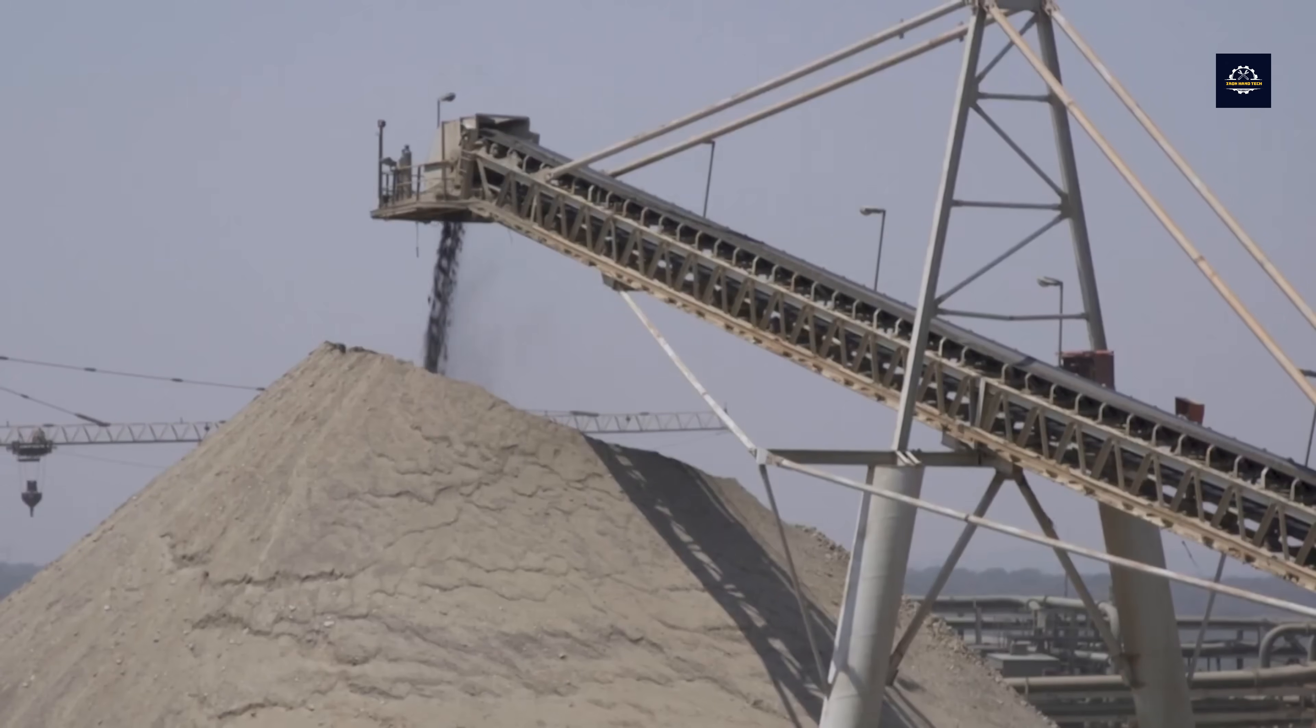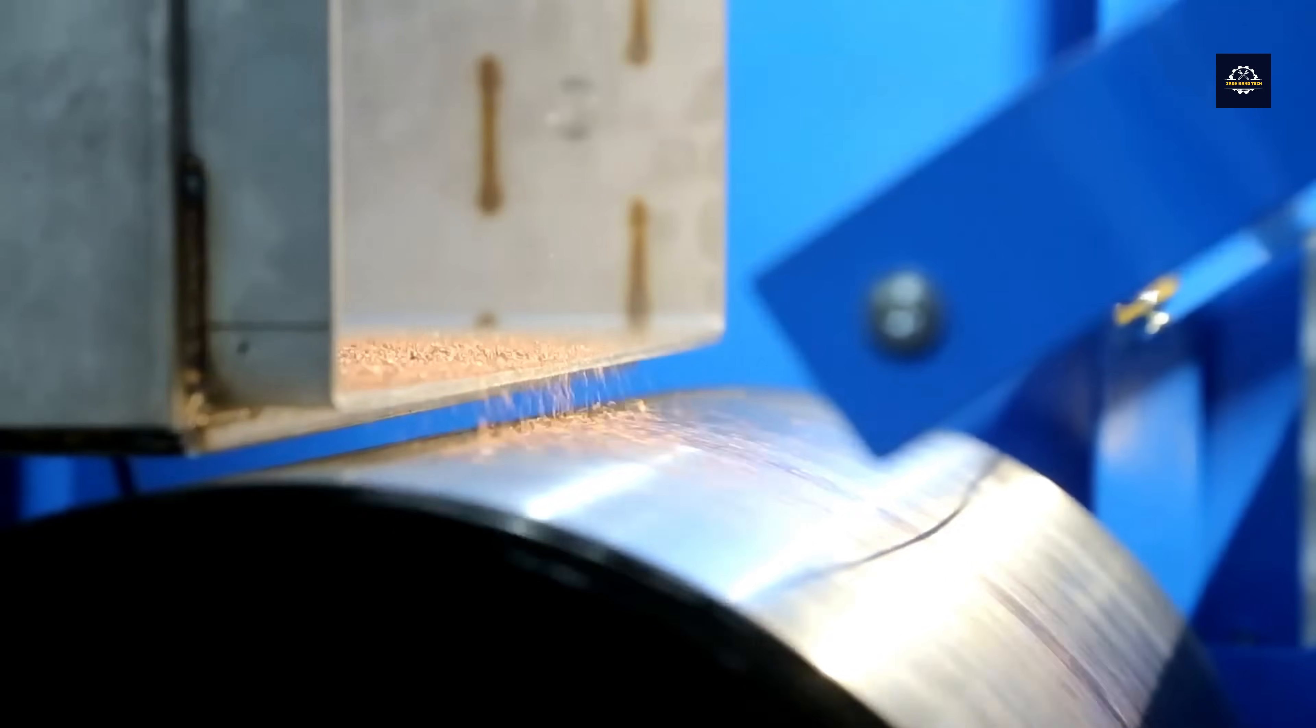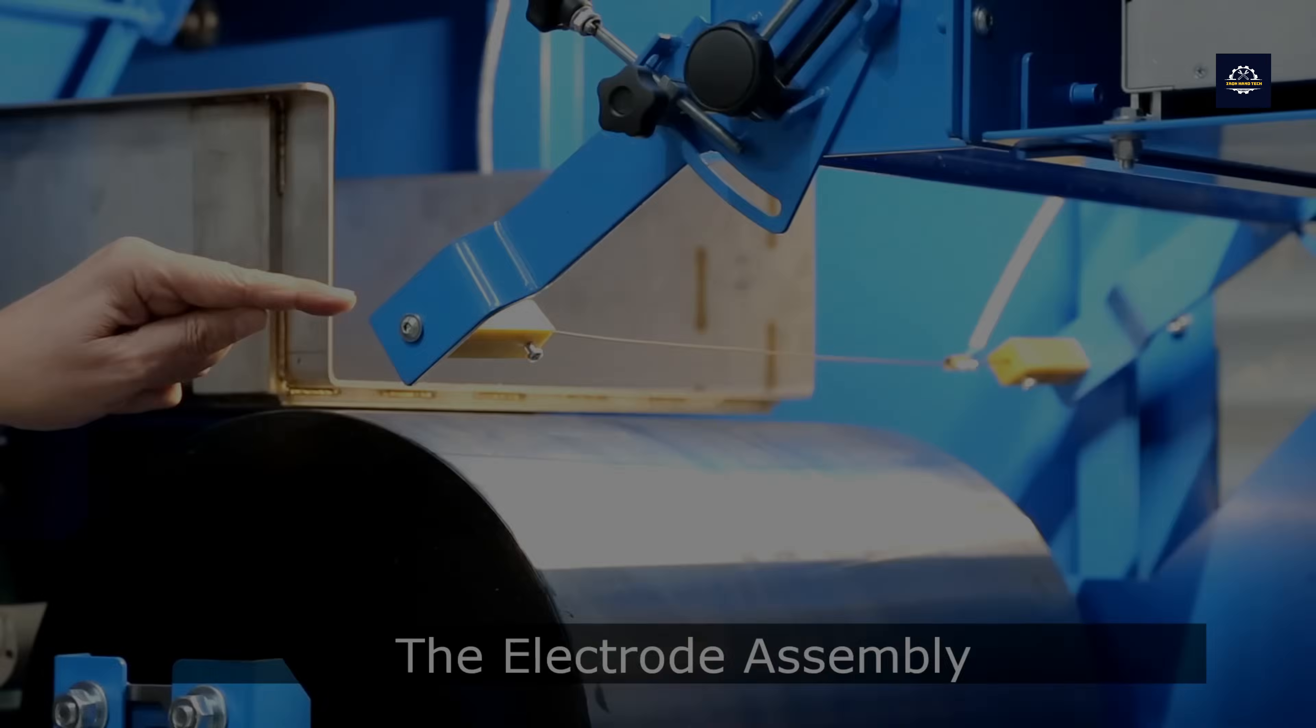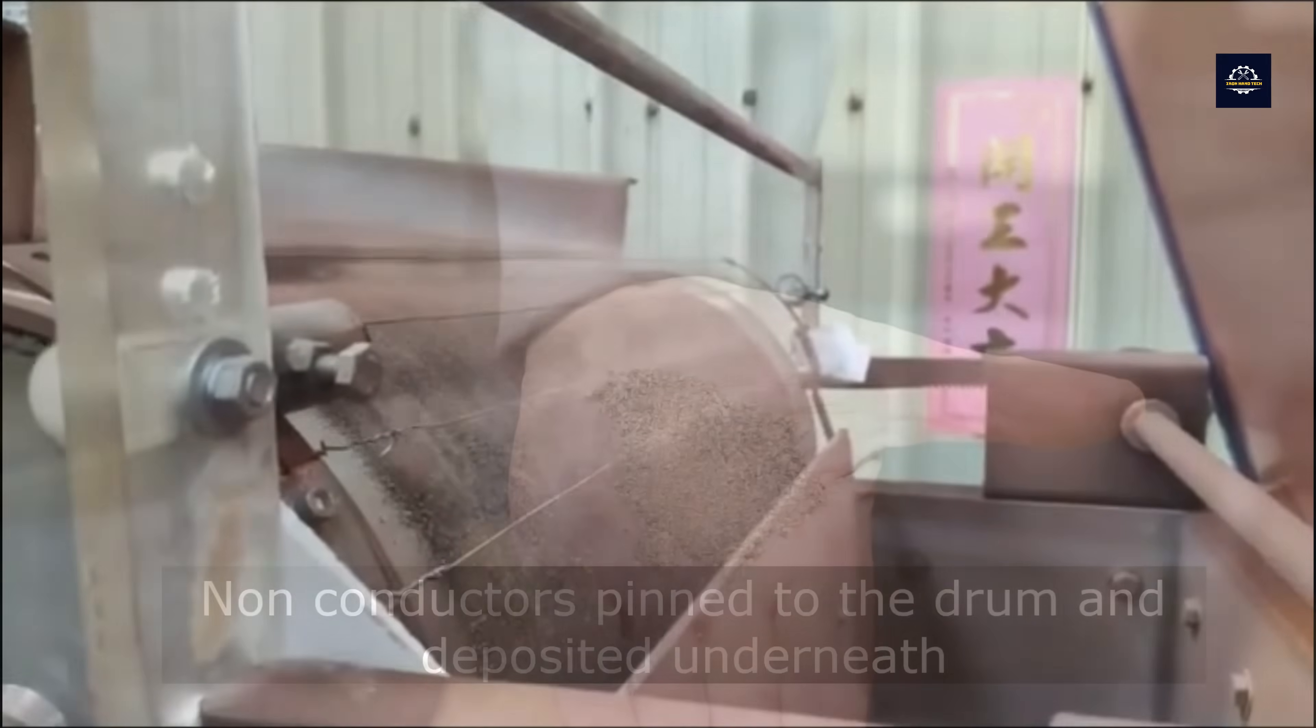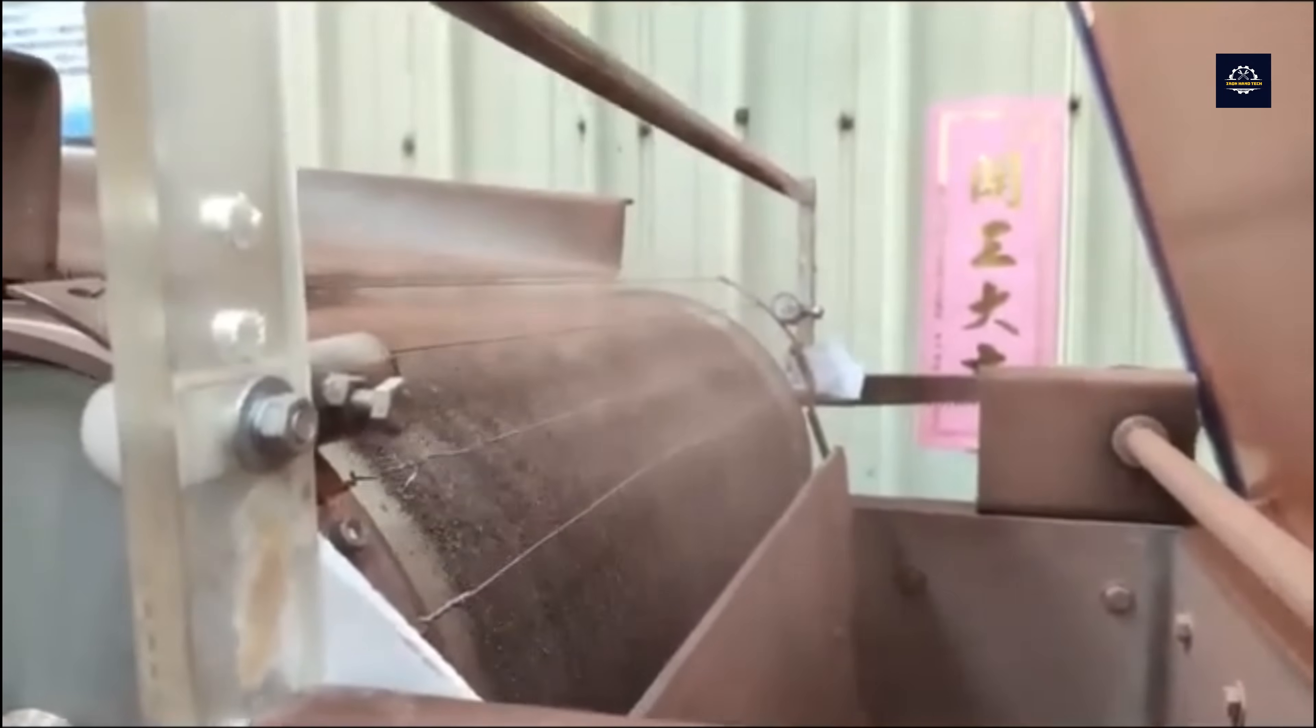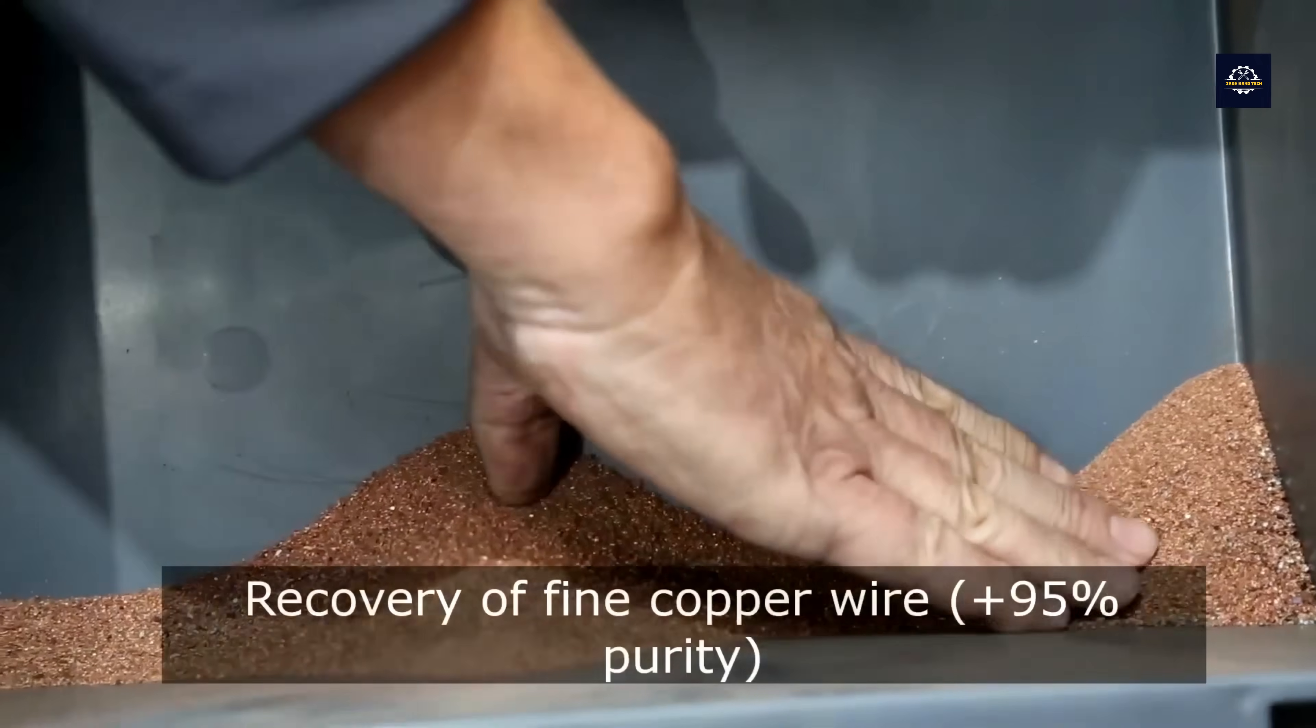Recycling copper from old electrical wires is a clear demonstration of the power of technology and environmental awareness. Every recycled copper wire represents a long journey from waste to becoming a vital part of modern industries. But more importantly, it's a reflection of collective efforts to protect natural resources and reduce the negative impact on our planet.